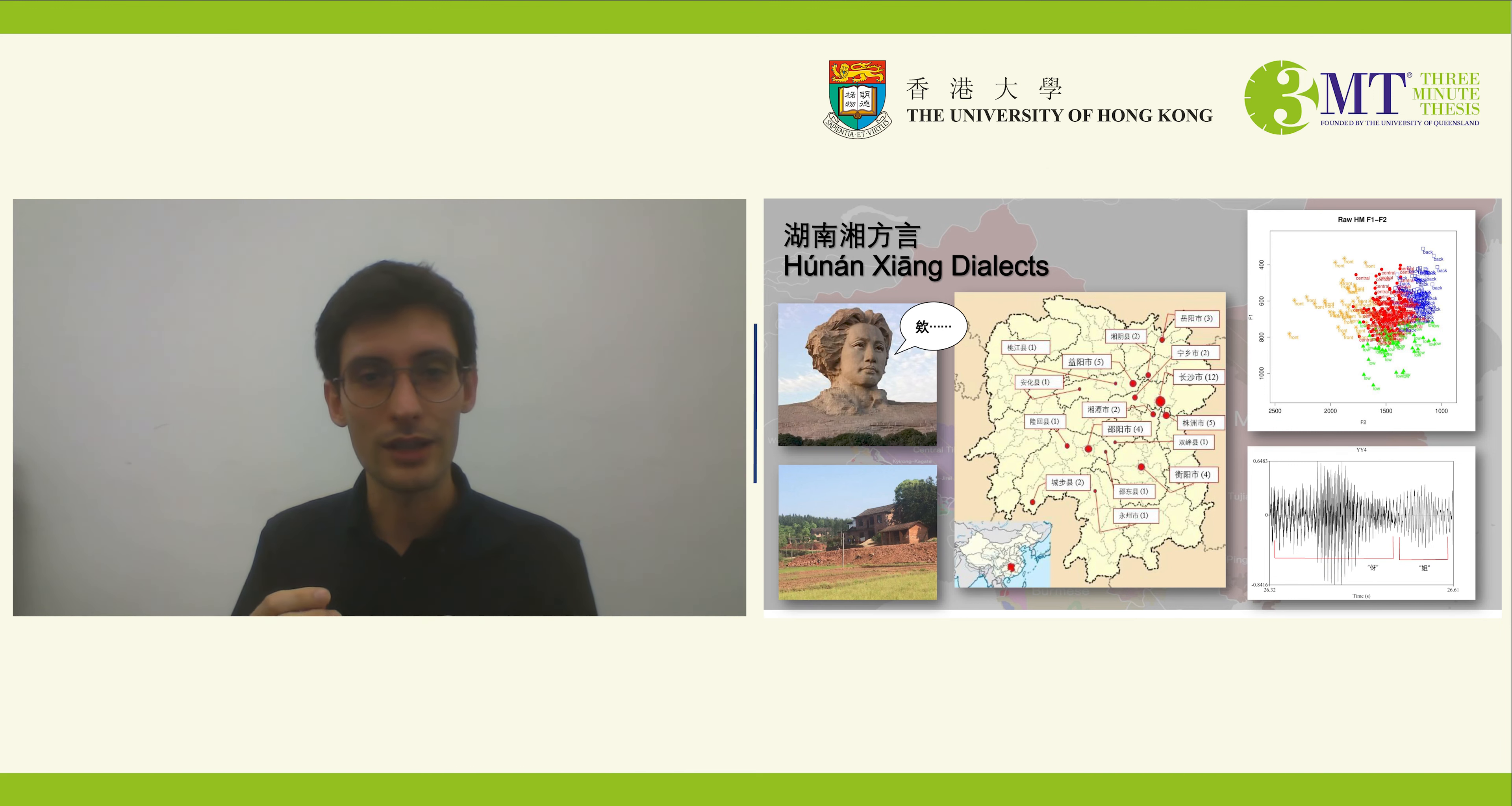Most of us today are aware that Chinese is not a single mutually intelligible language, but is rather a collection of different, not necessarily mutually intelligible languages. In Hong Kong, we're very well aware of this owing to differences between Mandarin and Cantonese, but between these two, there's a lot of different varieties we may know less about, and one of these is Xiang.